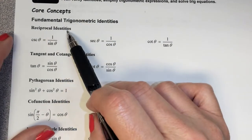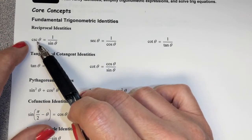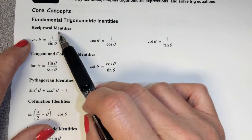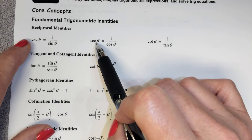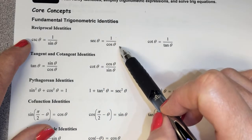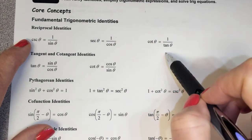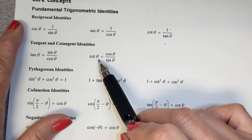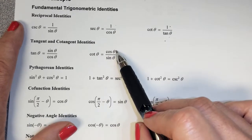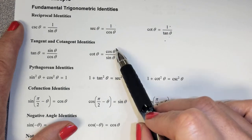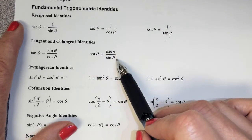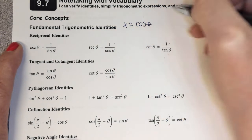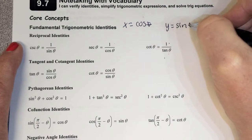We have the reciprocal identities — these are the ones you probably already know. Cosecant is 1 over y, so therefore cosecant is 1 over sine. Secant is 1 over x, so therefore it's 1 over cosine. Cotangent is 1 over tangent, but really the name we're going to use most of the time for cotangent is cosine over sine. That works because cotangent is x over y, and x equals cosine theta and y equals sine theta on the unit circle.